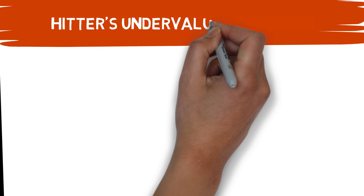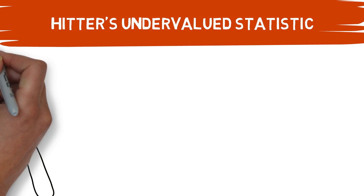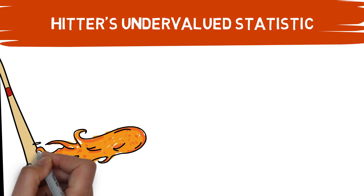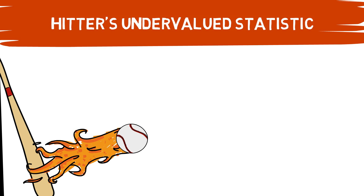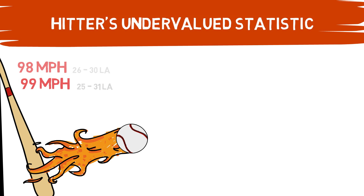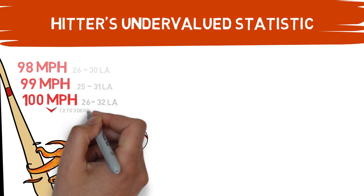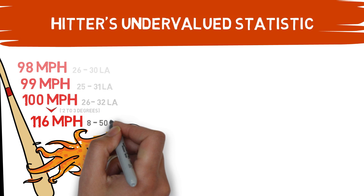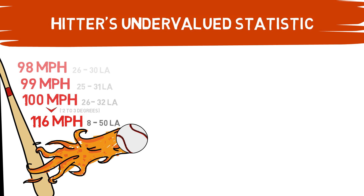To begin with, let's cover a very new and very interesting statistic relating to a hitter's performance — it has to do with barrels, which we've covered briefly on the channel before. A barrel is a ball that must have an exit velocity above 98 miles per hour, within a certain range of launch angles. At the minimum exit velocity of 98, the launch angle range is between 26 and 30 degrees. As exit velocity increases, the launch angle range expands by one degree in each direction — so at 99 mph it's 25 to 31 degrees, and at 100 it's 26 to 32 degrees. Once exit velocity surpasses 100 mph, the range grows by two or three degrees each time, all the way up to 116 mph, where the launch angle range opens from 8 to 50 degrees.